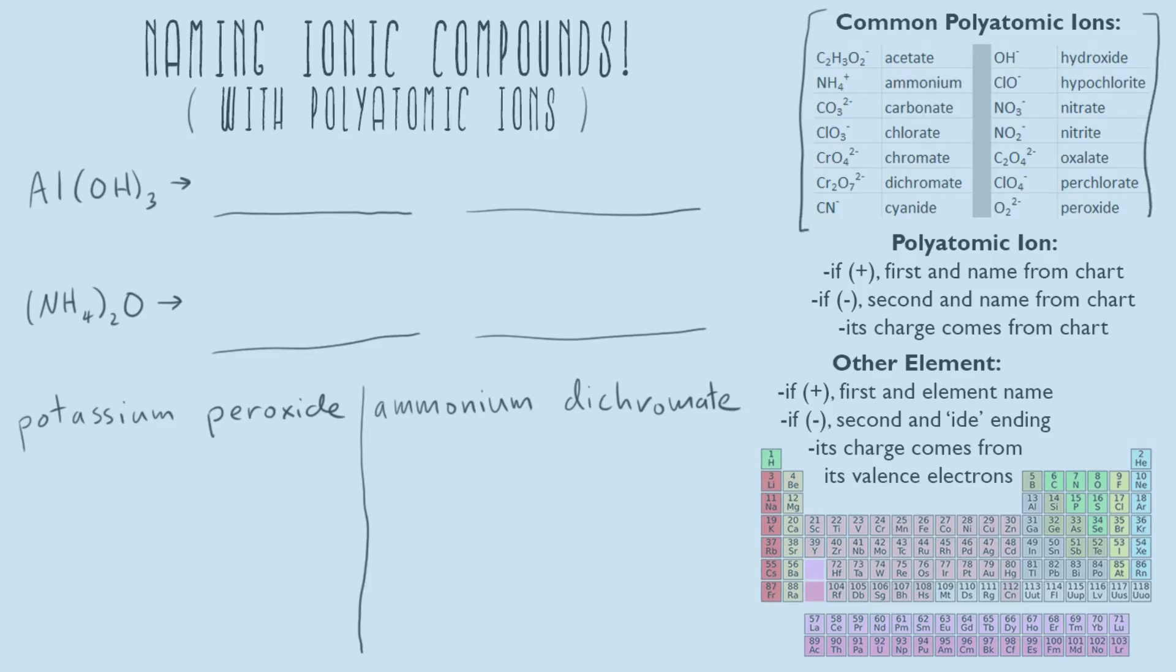Basically what they are are just molecules that are really stable when they form, but they have a charge. Because they have a charge, even if they are themselves covalently bonded, they're able to form ionic bonds with other ions.